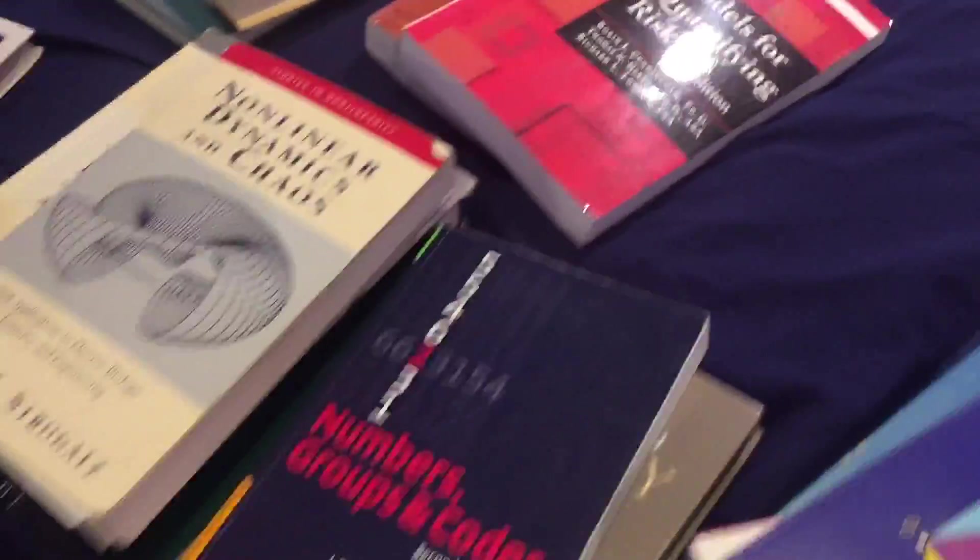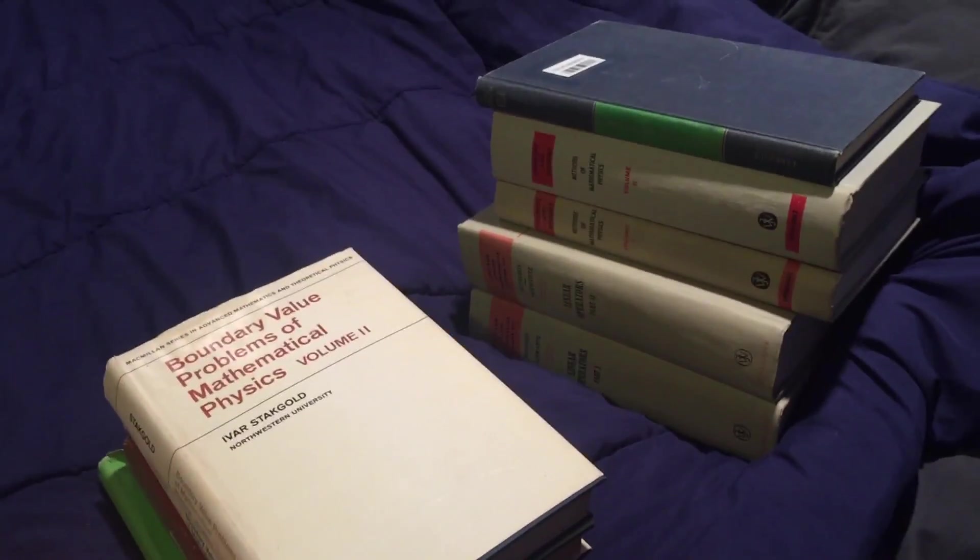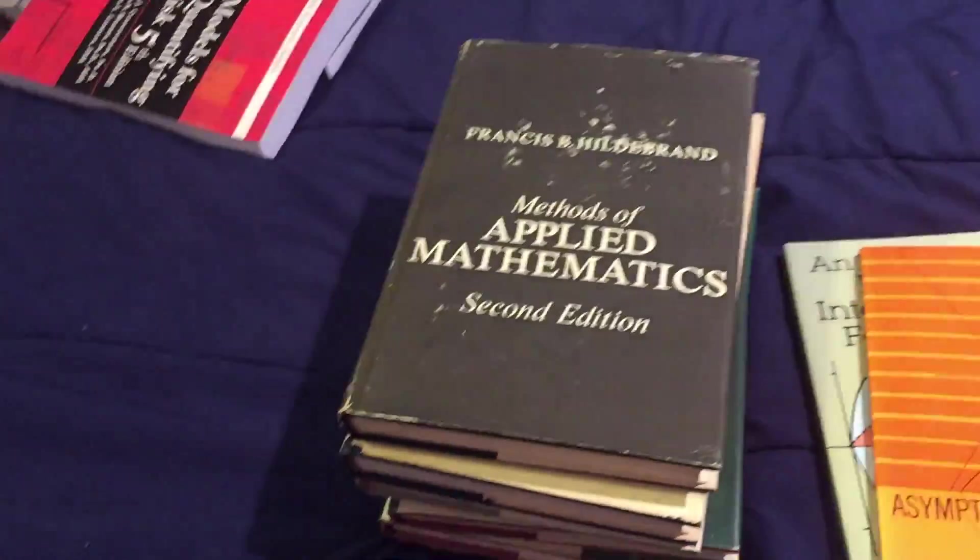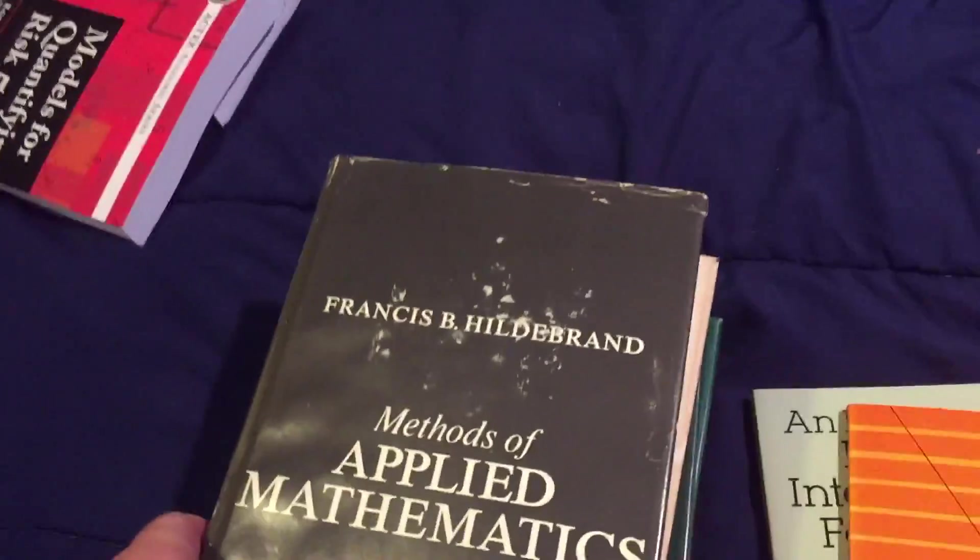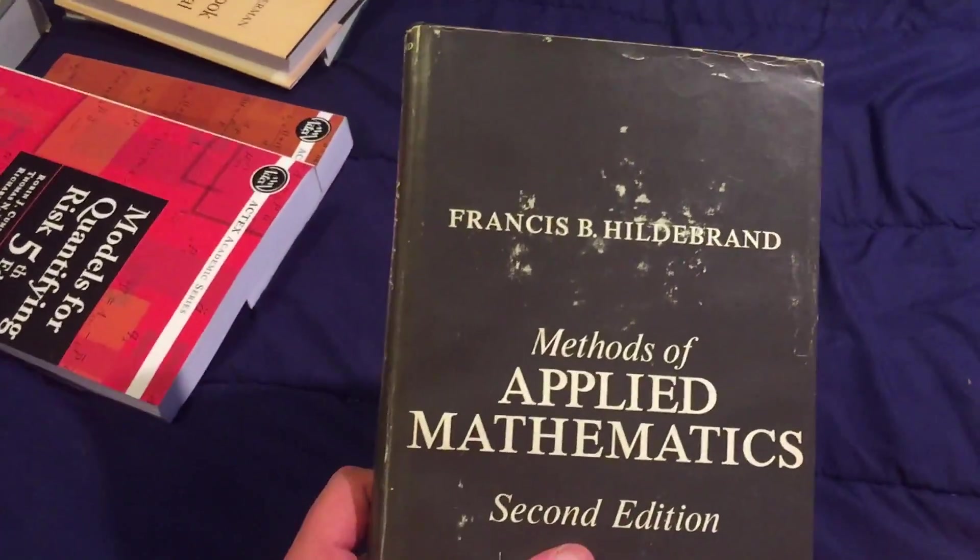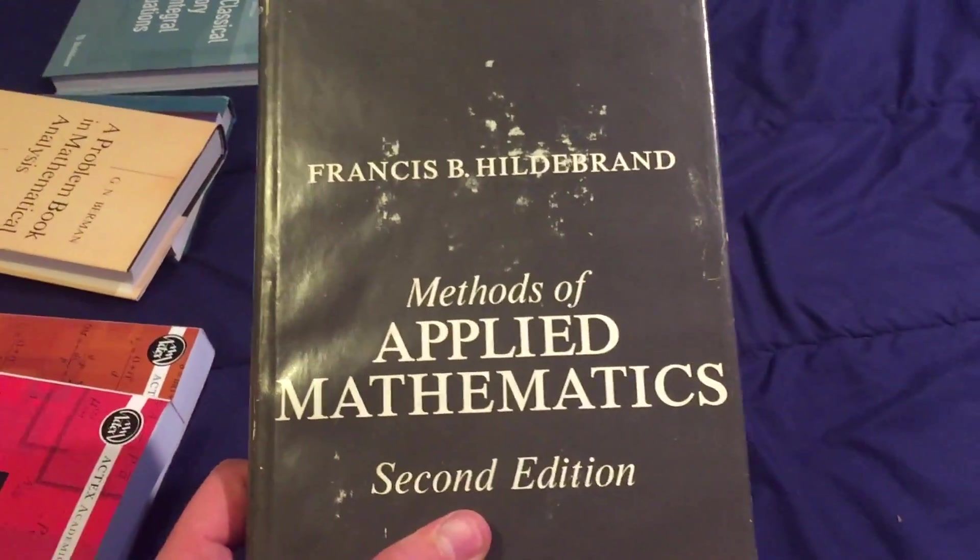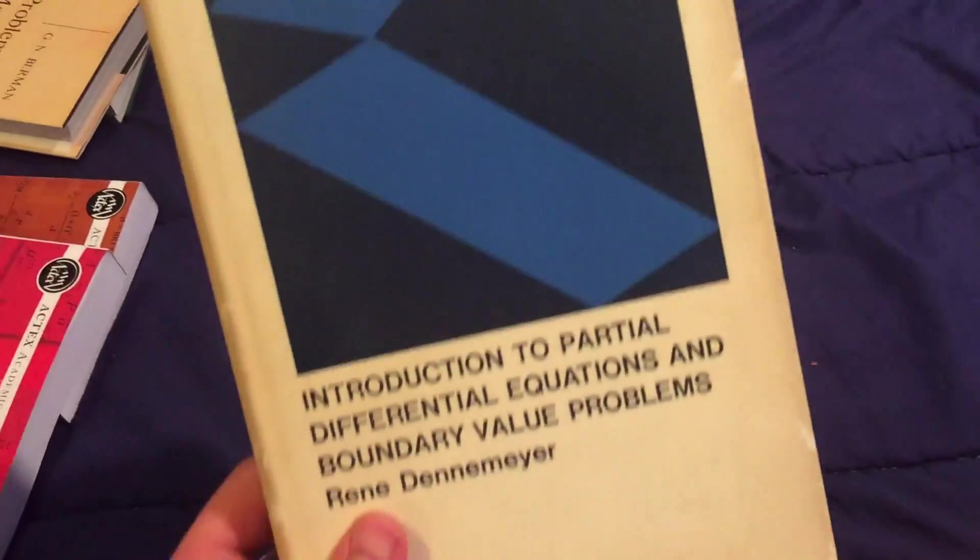So those are all the books that I've either looked through or read or used in college. And then I've got all these other books that were donated to me. There was a former professor that donated them to our library at Penn State Mont Alto, but the library didn't want them, so I said I'll take them. So let's see, I haven't read any of these, but a lot of them are classics. So I don't know if you'll recognize any of them. So this one here, Methods of Applied Mathematics by Hildebrand. Apparently he's a really big deal. I don't really know a lot about him. There's Introduction to Partial Differential Equations and Boundary Value Problems. Here's some Fourier Series and Boundary Value Problems by Churchill.